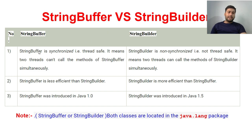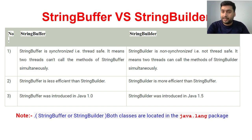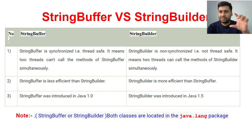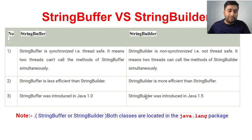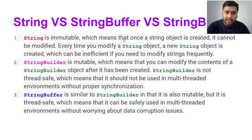Here are the differences between StringBuffer and StringBuilder. StringBuffer is synchronized — it is thread-safe. StringBuilder is non-synchronized — it is not thread-safe. StringBuffer is less efficient than StringBuilder in terms of time complexity because StringBuffer handles thread safety, making it a little slower. StringBuilder is faster. StringBuffer was introduced in Java 1.0; StringBuilder was introduced in Java 1.5. Both classes are located in the java.lang package, along with String.